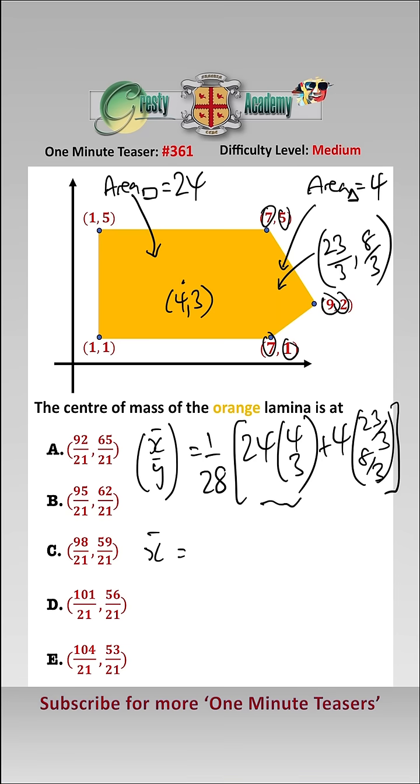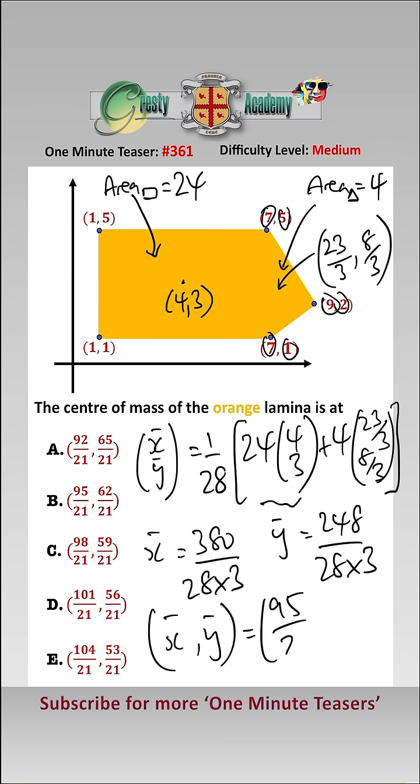Therefore, we have that x-bar is 380 over 28, times 3, and y-bar is 248 over 28, times 3, cancelling out the 7. That gives us that x-bar, y-bar is equal to 95 over 21, 62 over 21, which is answer B. Thank you.